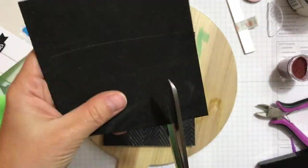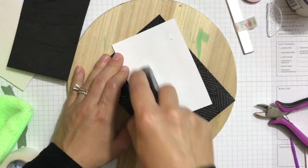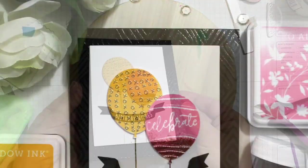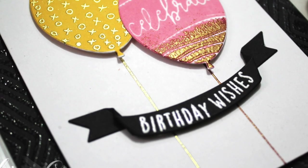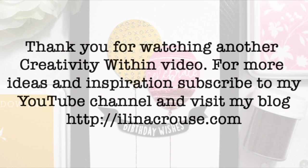Next I'm using some black foam to adhere that panel onto my card to add some dimension, and I'm using fast fuse or Tombo Xtreme adhesive to adhere that, and we are done with that. Thanks for watching and see you soon in another video and don't forget to subscribe to my YouTube channel and visit my blog. Bye!